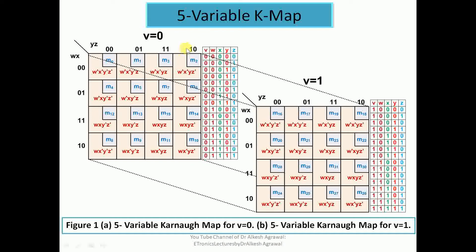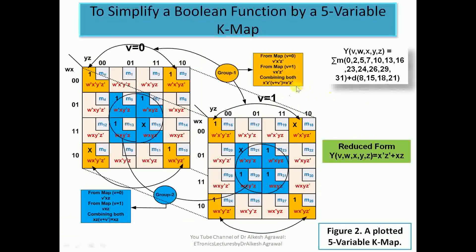Grouping across both maps — V=0 and V=1 — allows formation of the biggest group. This concept is clarified with examples using don't care conditions. In this example we have a boolean function of five variables V, W, X, Y, Z with min terms 0, 2, 5, 7, 10, 13, 16, 23, 24, 26, 29, 31 and don't care conditions at M8, M15, M18, and M21.